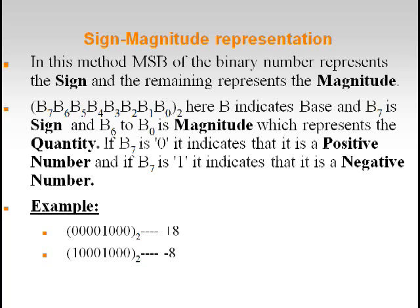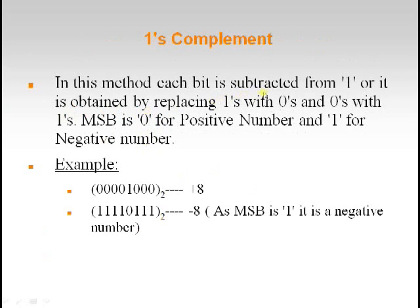Now let us see 1's complement representation. In this method each bit is subtracted from 1, obtained by replacing 1s with 0s and 0s with 1s. MSB is 0 for a positive number and 1 for a negative number. So we replace 0s with 1s and 1s with 0s; if the MSB is 0 it is positive, if the MSB is 1 it is negative.